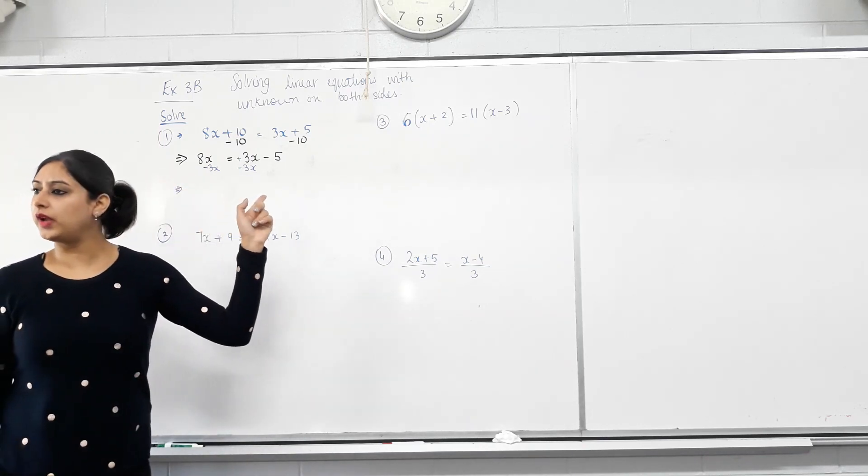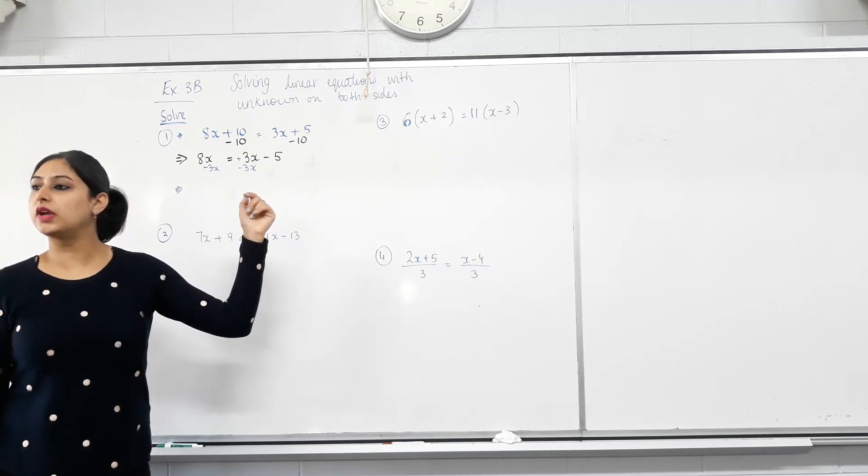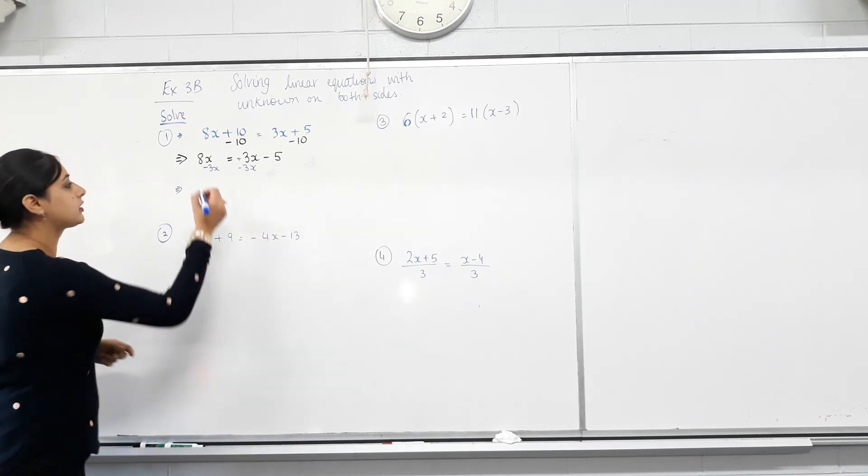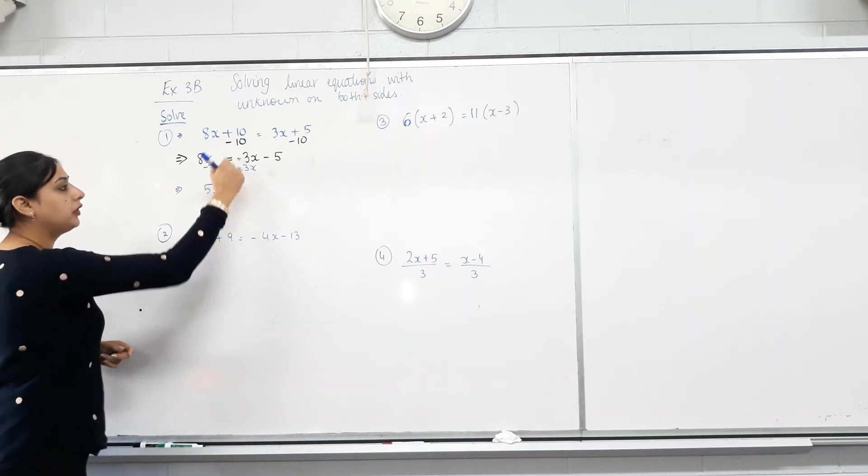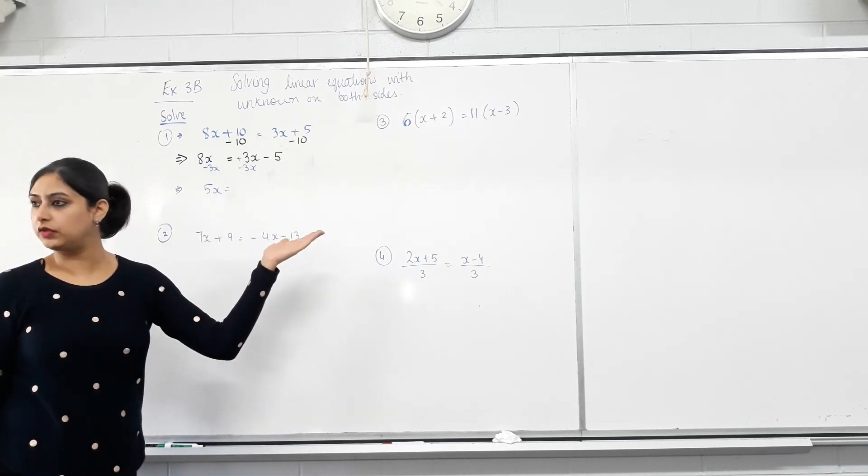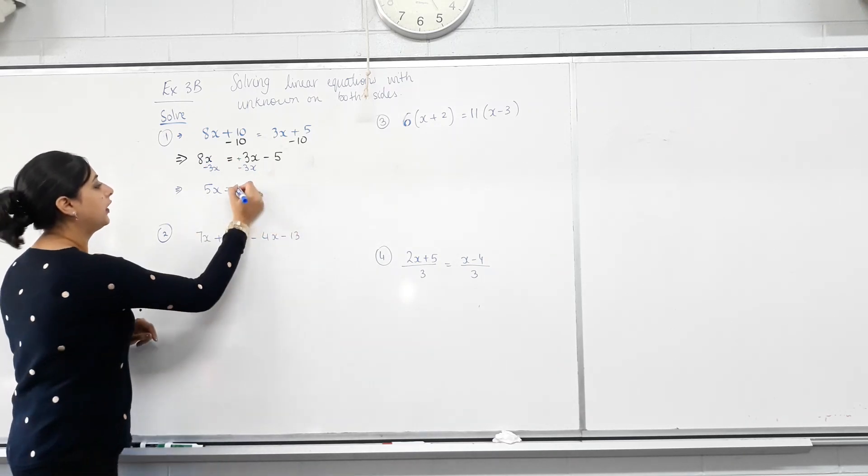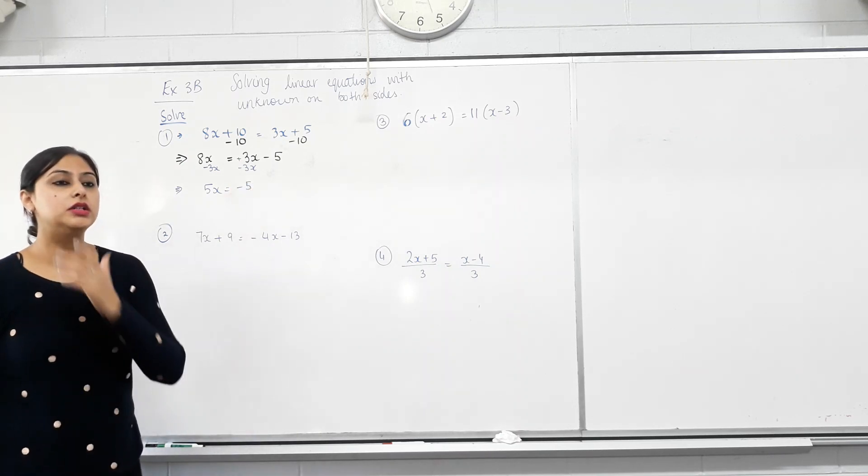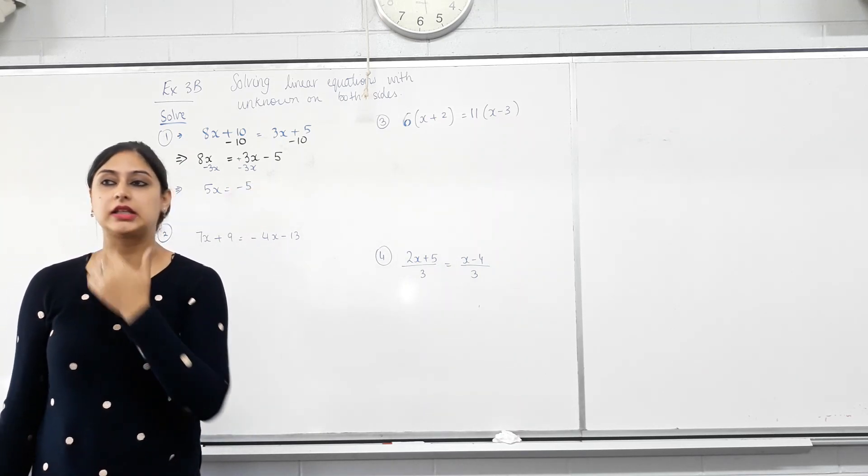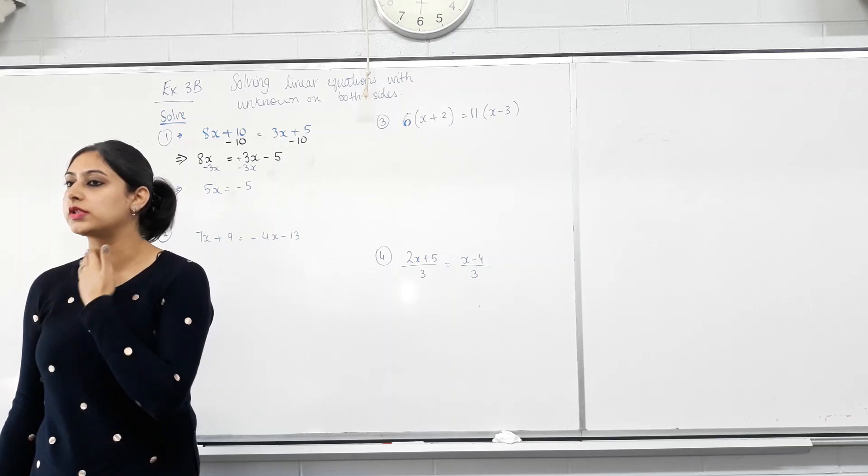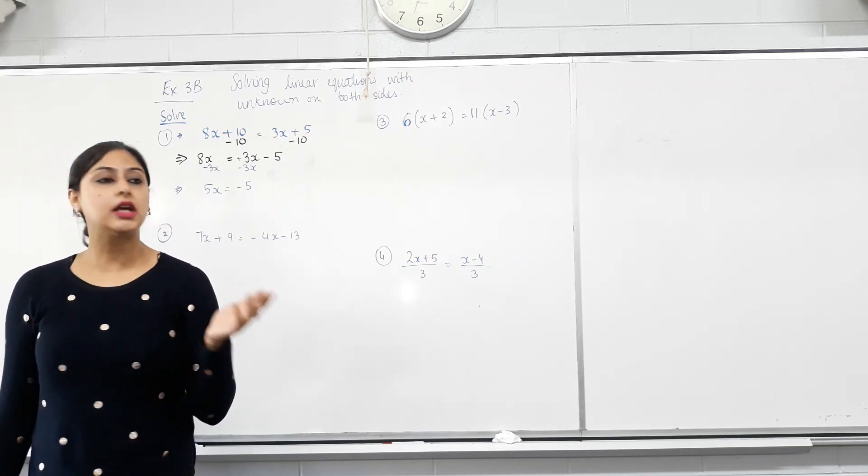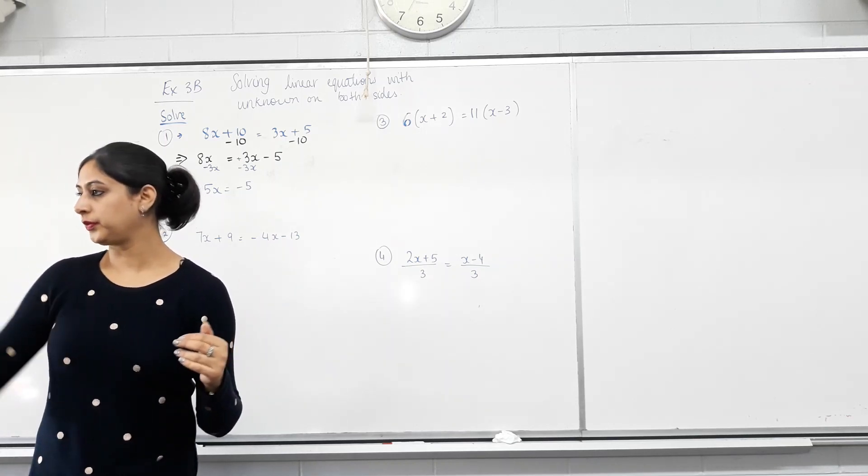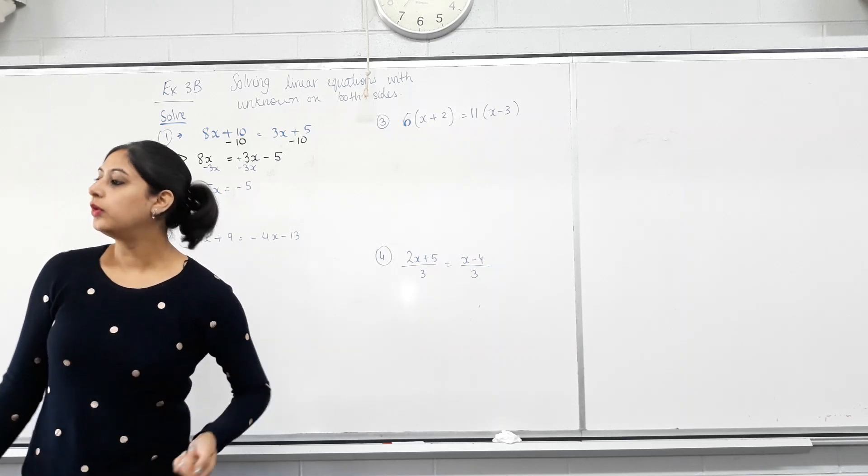Like terms? 8x and 3x? Yes. 8x minus 3x is? 5x. 3x take away 3x? Zero. That was the whole point. To get rid of 3x there. And negative 5. Now, I need to get rid of the 5 that's with the x. Because I want x equals. I don't want that 5. What is that 5 doing to x? It's times-ing. So we're going to do the opposite. So we're going to divide. Well done.